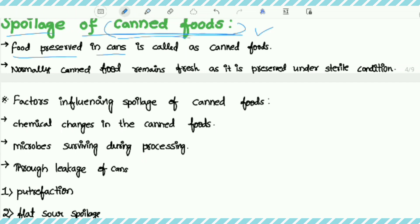What is meant by canned foods? Food preserved in cans is called canned foods. Examples are beans, soups, and meat preserved in cans. Normally canning is a preservation method, but sometimes these canned foods also get spoiled.